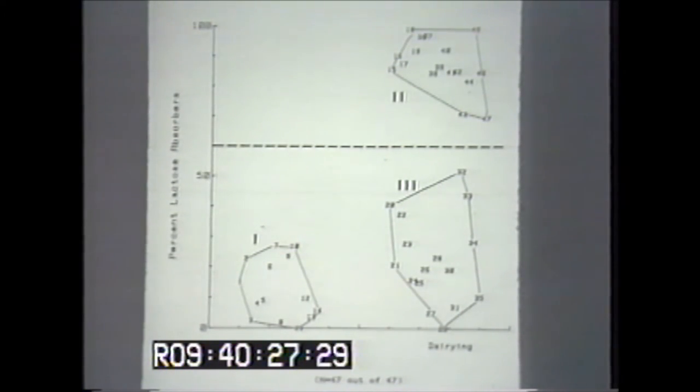In the absence of a selective advantage, you maintain high frequencies of LM and there's no elevation of the frequency of the big L allele.